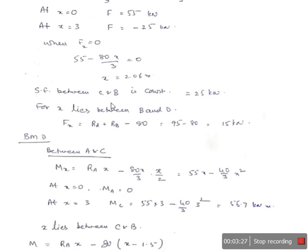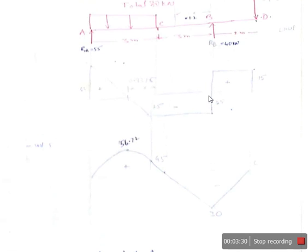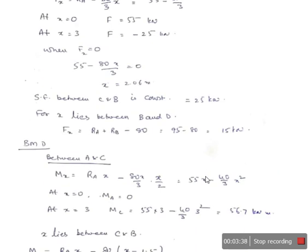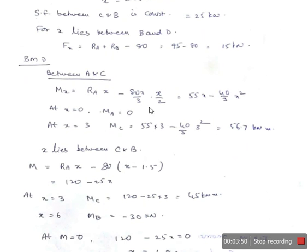The shear force between C and B is constant because there is no load in that region — it remains minus 25 kilonewtons. Between B and D, we calculate the shear force as RA plus RB minus 80, giving 15 kilonewtons.